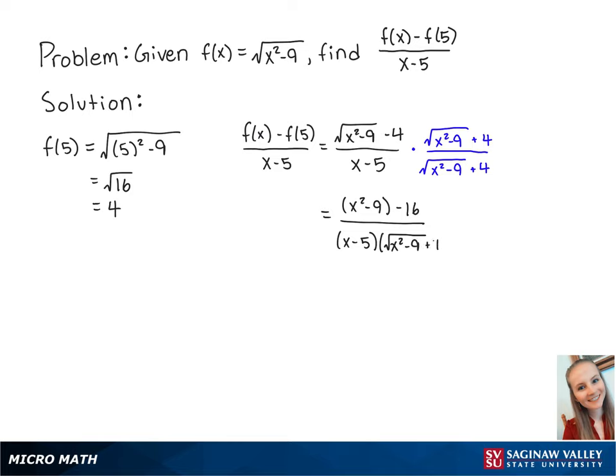If we combine like terms on the top, we get x squared minus 25 over x minus 5 times the square root of x squared minus 9 plus 4.